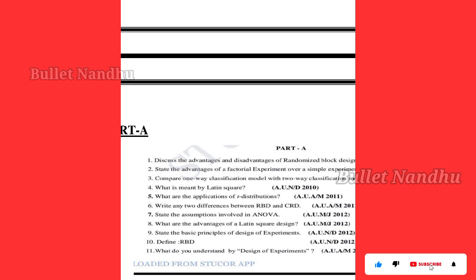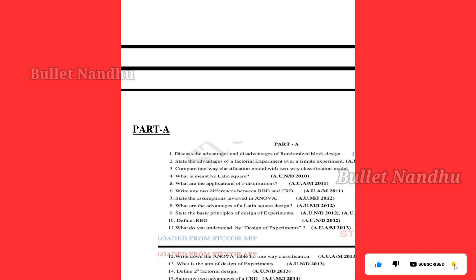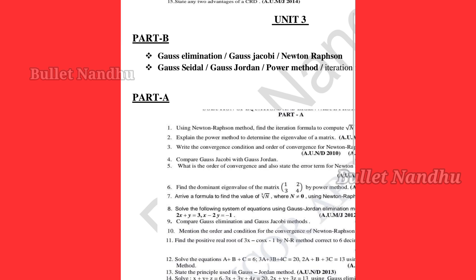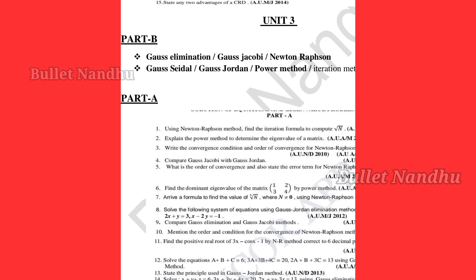So you can see the answers to the 2-mark questions. We are going to tell you that in the video. It's the Gauss elimination method, Gauss-Jacobi method, Newton-Raphson method. Suppose you have a Gauss elimination method — it's a Gauss-Jacobi method. Suppose you have a Gauss elimination method, you can use the Gauss-Jordan method. But you can use 3 lessons — you can use this topic.